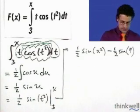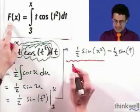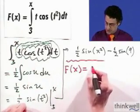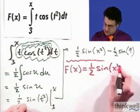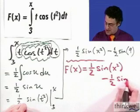So after all that work, lots and lots of work, we see that the function f of x equals 1 half sine of x squared minus 1 half sine of 9.